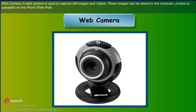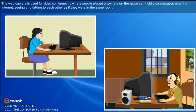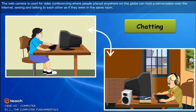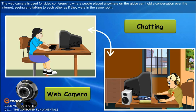Web camera: A web camera is used to capture still images and videos. These images can be stored in the computer, printed or uploaded on the World Wide Web. The web camera is used for video conferencing where people placed anywhere on the globe can hold a conversation over the internet, seeing and talking to each other as if they were in the same room.